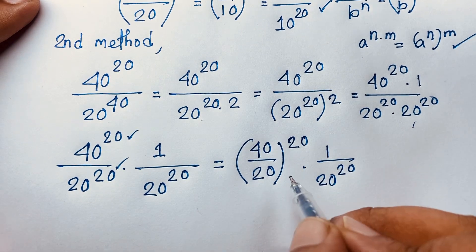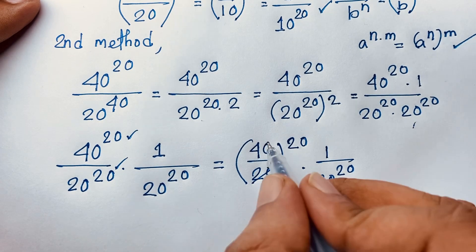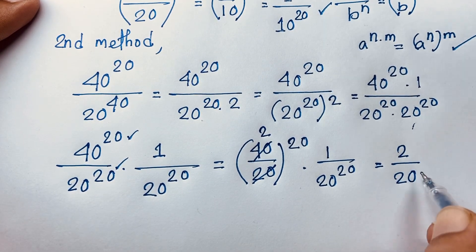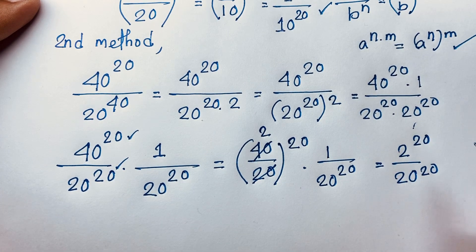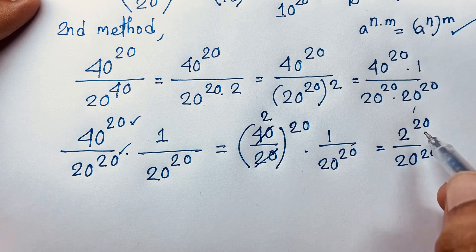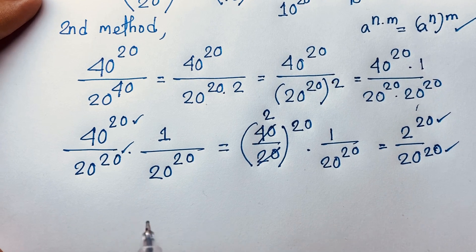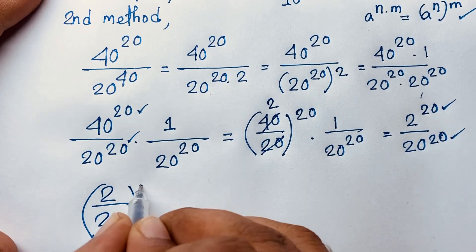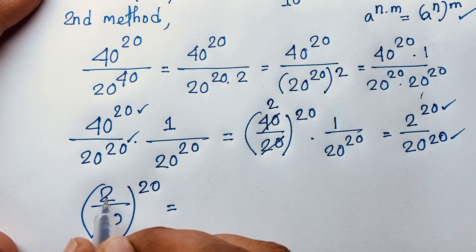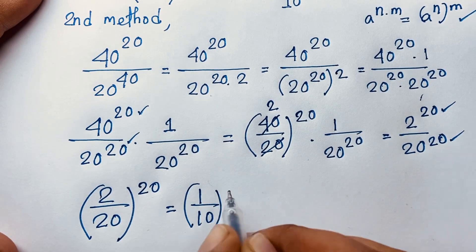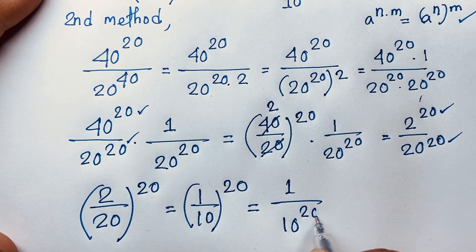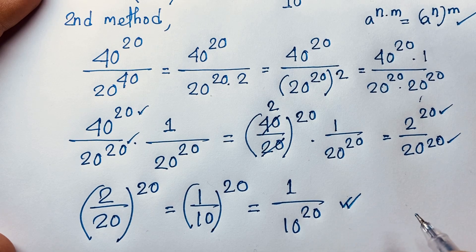Simplifying 40 over 20 gives 2, so I have 2 to the power 20 times 1 over 20 power 20. The exponents are the same, so I apply the formula again: (2/20) bracket power 20. Then 20 divided by 2 gives 1 over 10, bracket power 20, which is equivalently 1 over 10 to the power 20. This is the final answer.